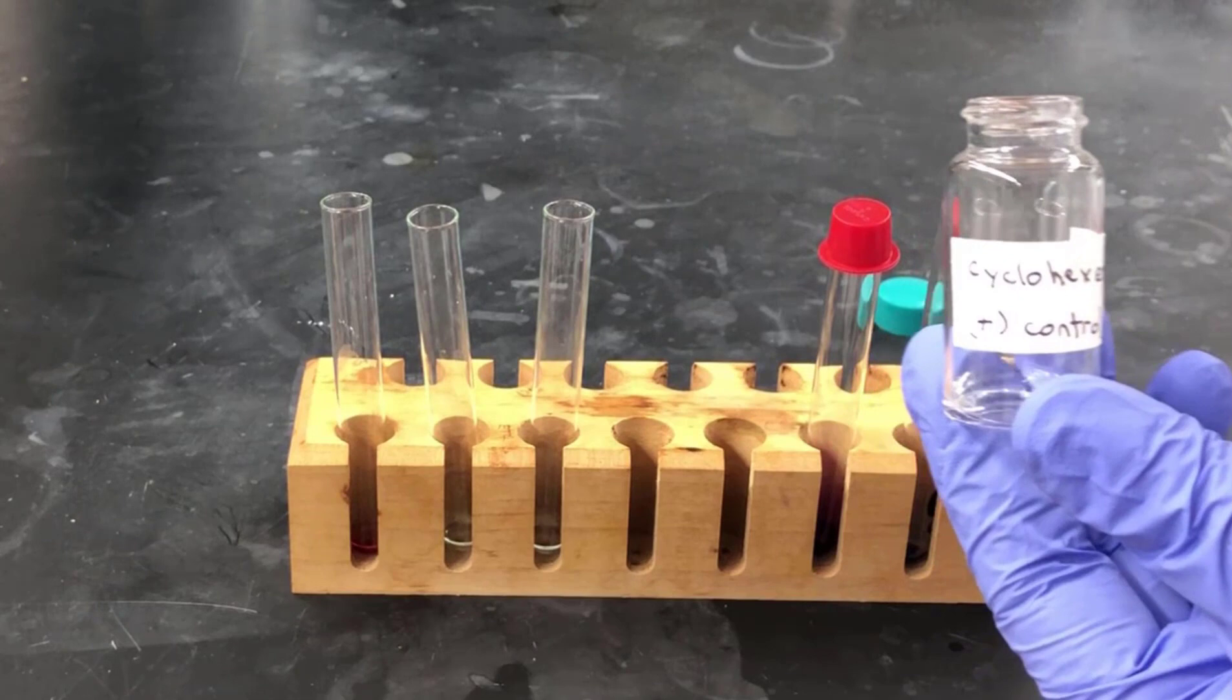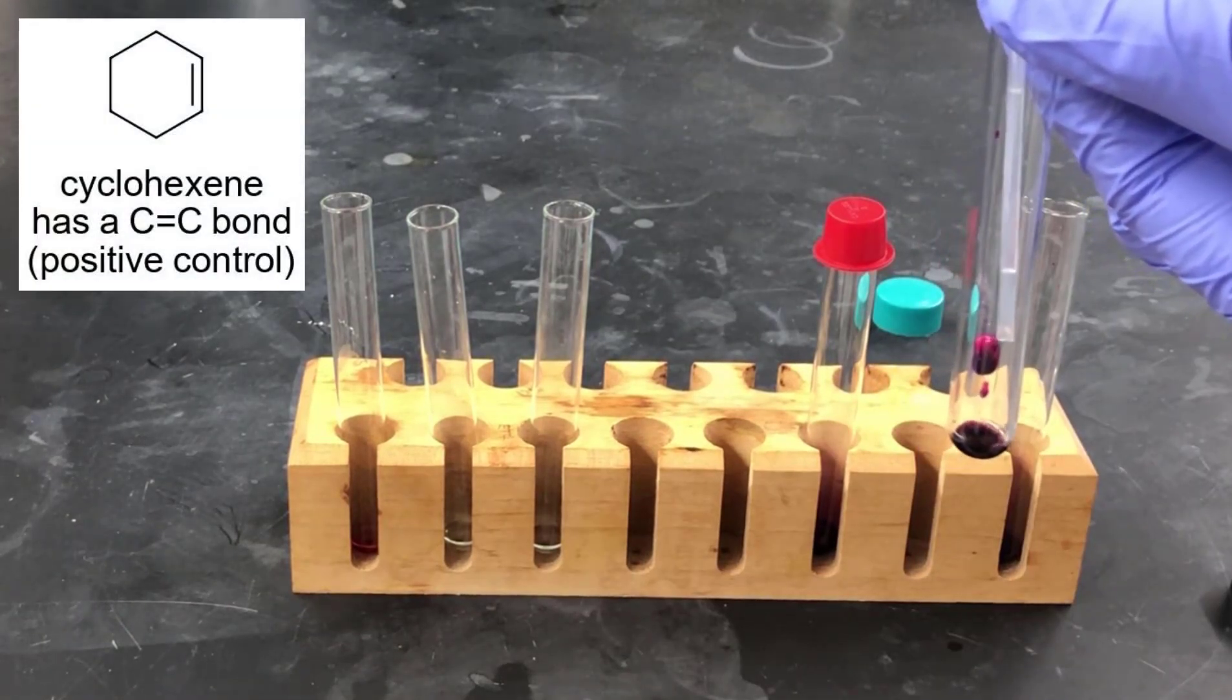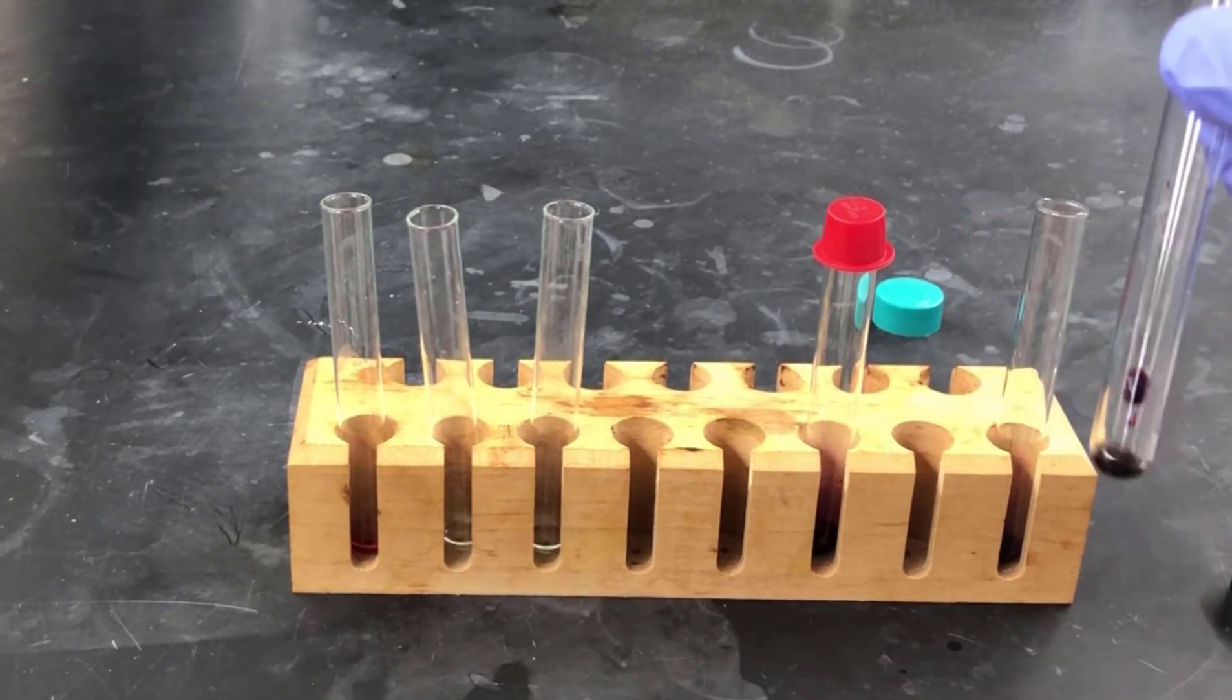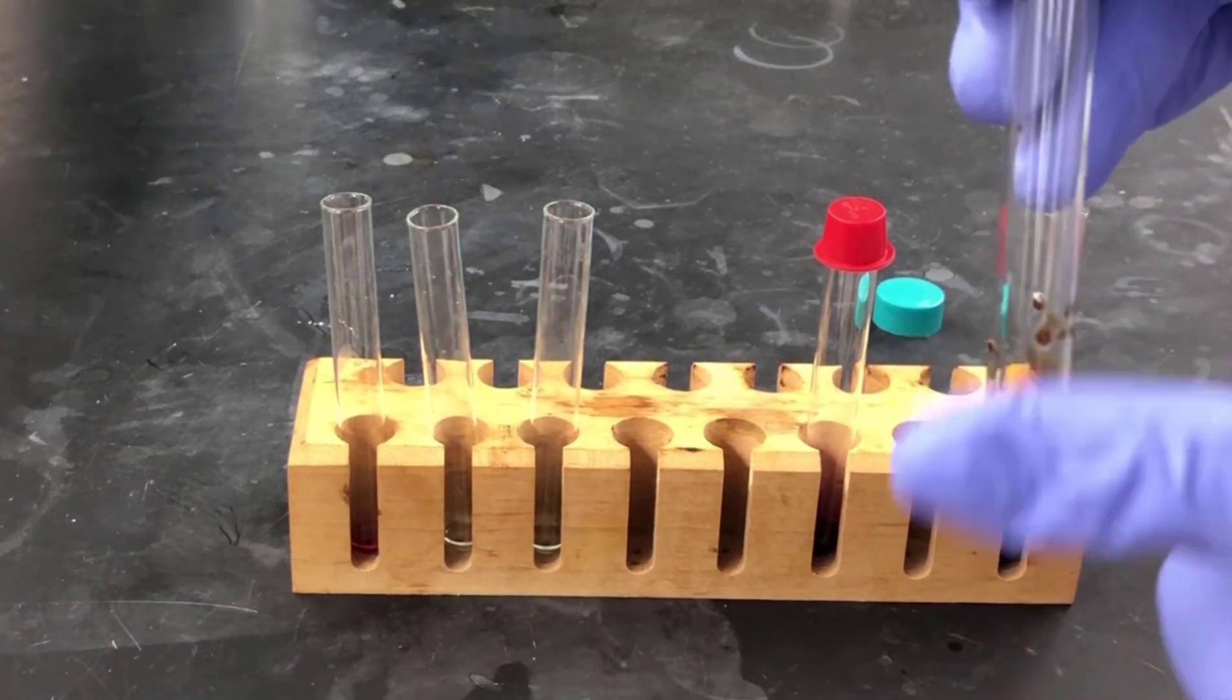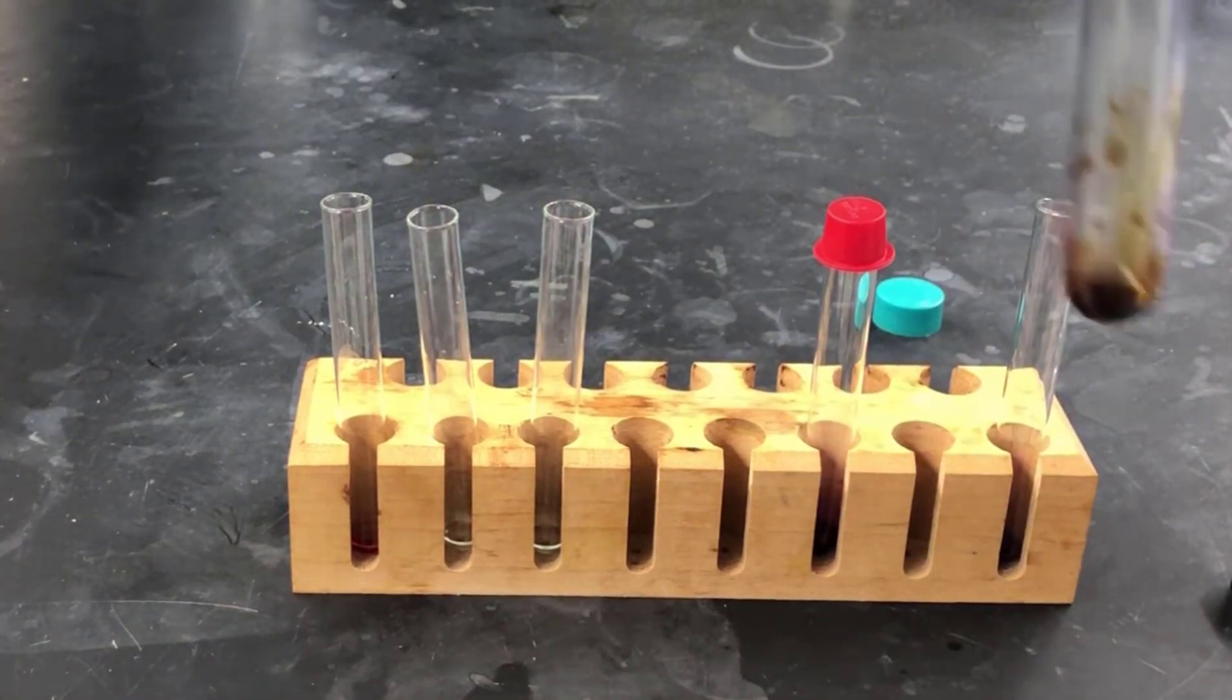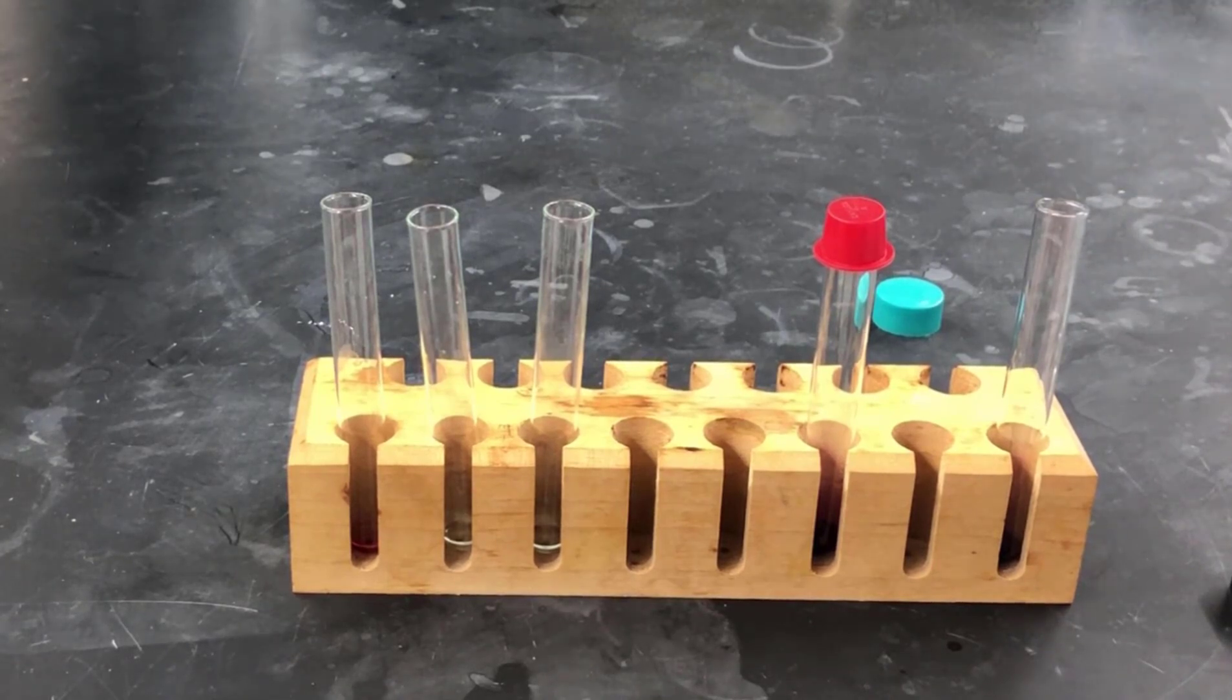Next, we'll do the positive control experiment with cyclohexene. This material contains a CC double bond, and it'll give a positive result. We add a couple drops of cyclohexene and note the result. This reaction is slower than the bromine reaction. We'll need to agitate for a while to be sure we're seeing a result. We can see the purple color being replaced by a brownish-red color. That red-brown color is the manganese dioxide precipitate forming. That indicates a positive result.